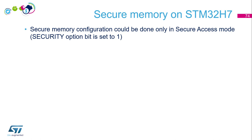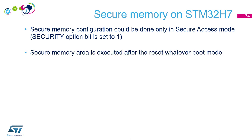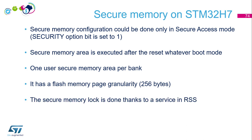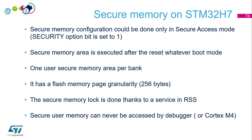On the STM32 H7, this configuration can only be done in secure access mode — meaning the security option byte bit must be set to 1. The secure memory area is executed after reset, whatever the boot mode. There is one secure memory area per bank, and it has a granularity of 256 bytes. The secure memory is locked using services in the RSS. The secure user memory can never be accessed by the debugger or by the Cortex-M4 in a dual-core configuration.